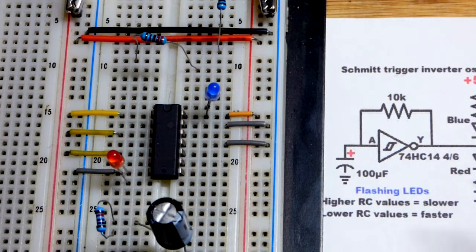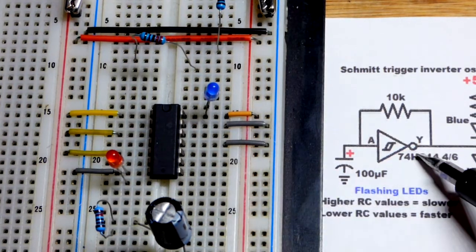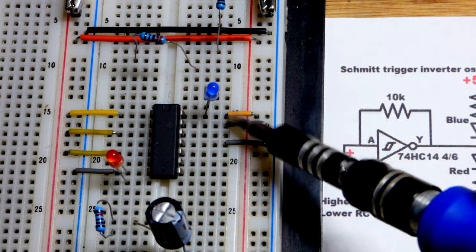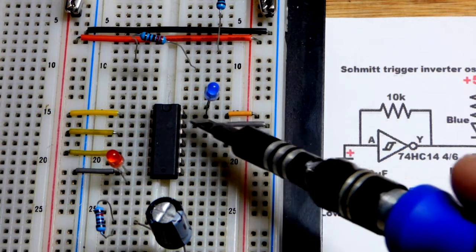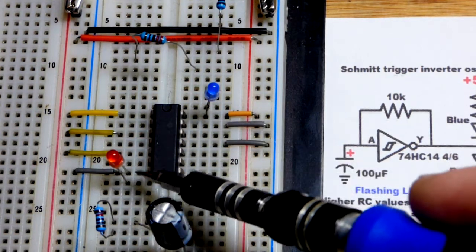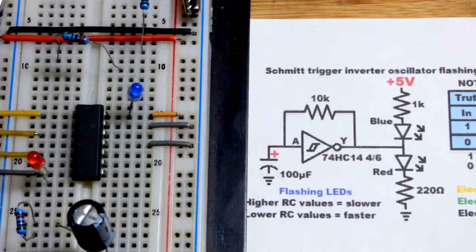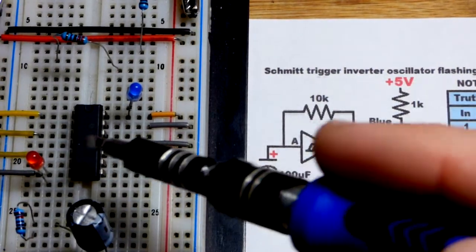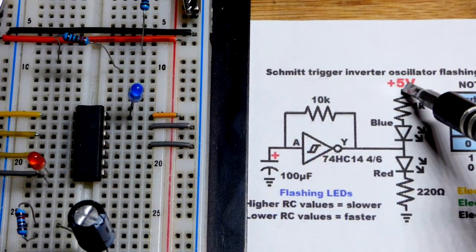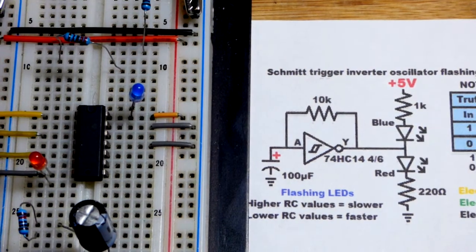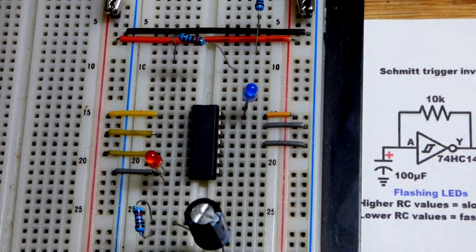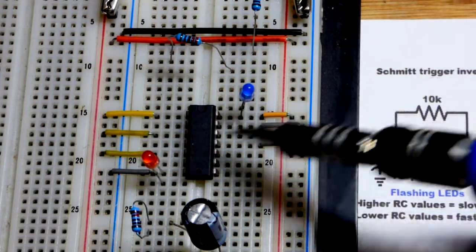So here we have the integrated circuit with most of the components removed. We need to power the integrated circuit. So the positive supply goes to pin 14, the negative supply there. We're going to use 5 volts, which is common for these integrated circuits. This particular one, we can use a wider range of voltages, but you always want to check the data sheet to make sure whatever voltage you're interested in will work.